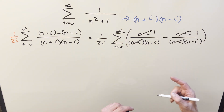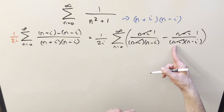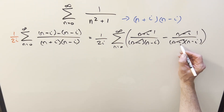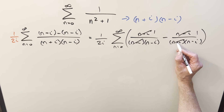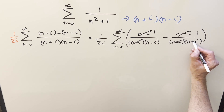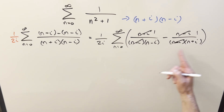Something's not right — I canceled the wrong one here. So this should be an n plus i here and a minus i here.